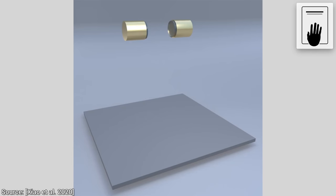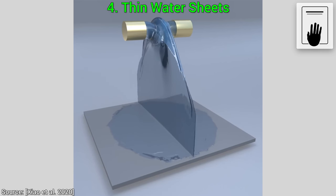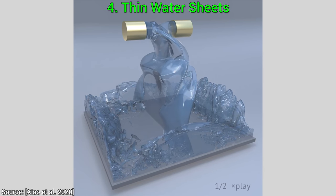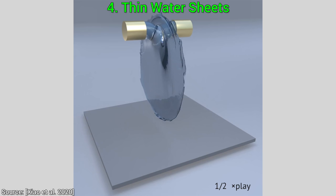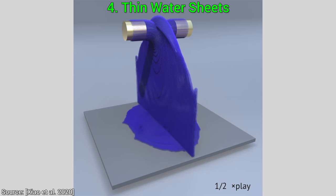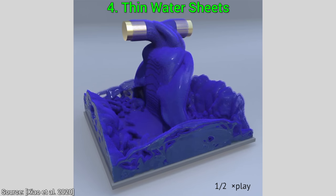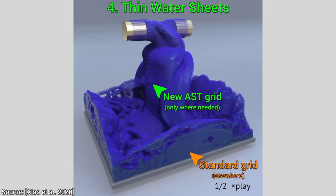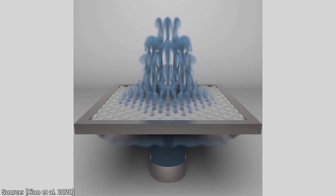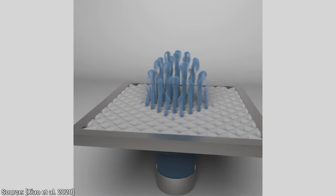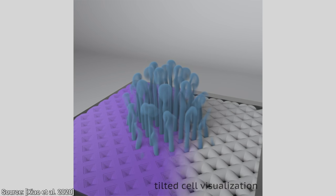Hold on to your papers for experiment number four: thin water sheets. You can see the final simulation here, and if we look under the hood — my goodness! Just look at how much work this algorithm is doing. And what is even better, it only does so where it is really needed; it doesn't do any extra work in these other regions. I am, so far, very impressed with this technique. We saw that it does a ton of work for us, increases the detail in our simulations, and helps things flow through where they should really flow through.